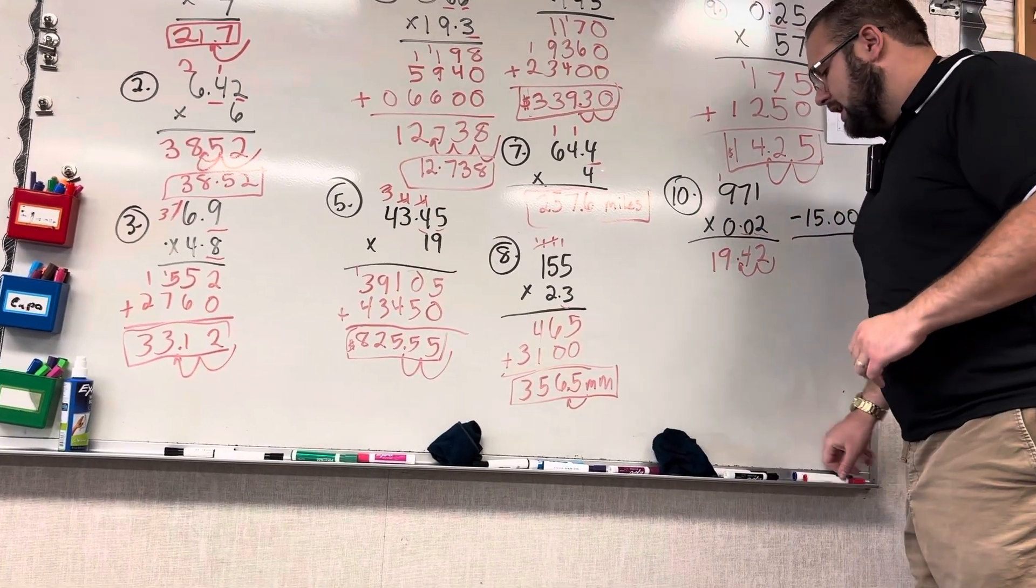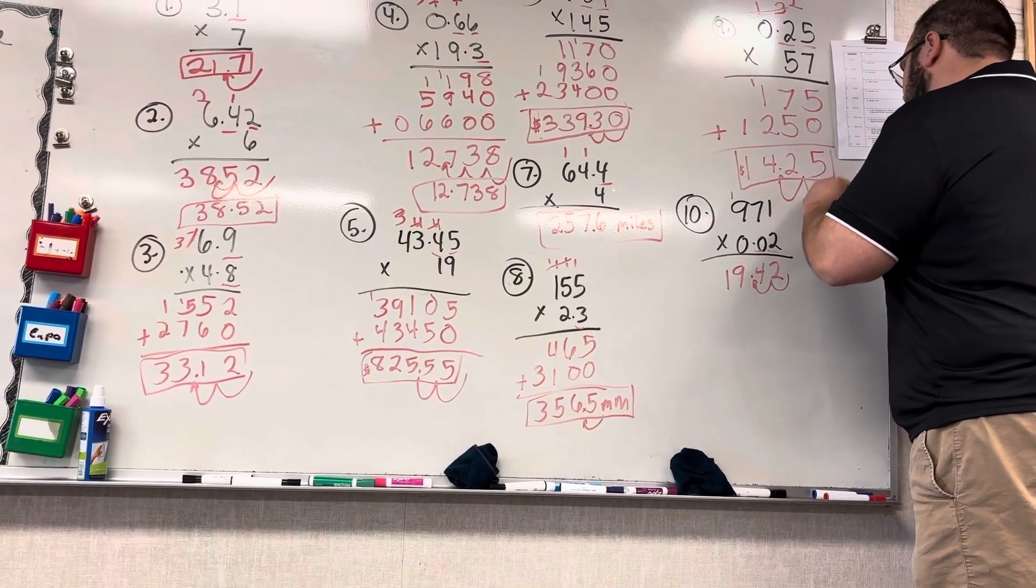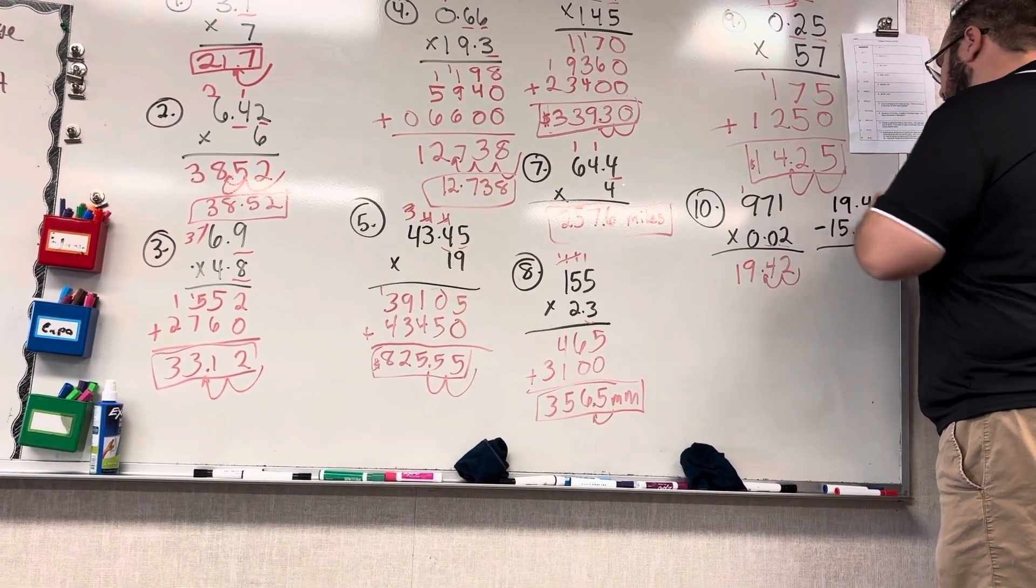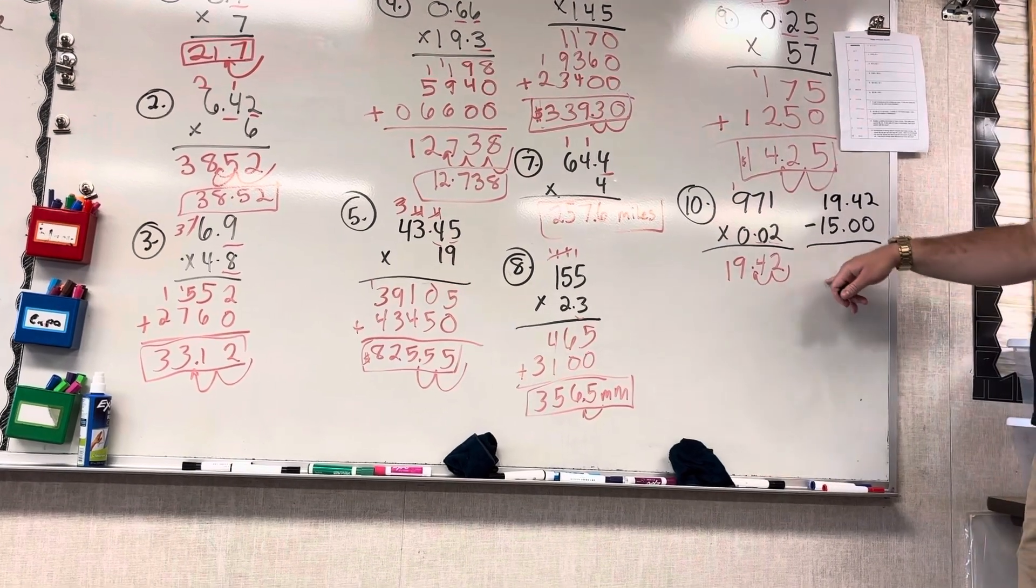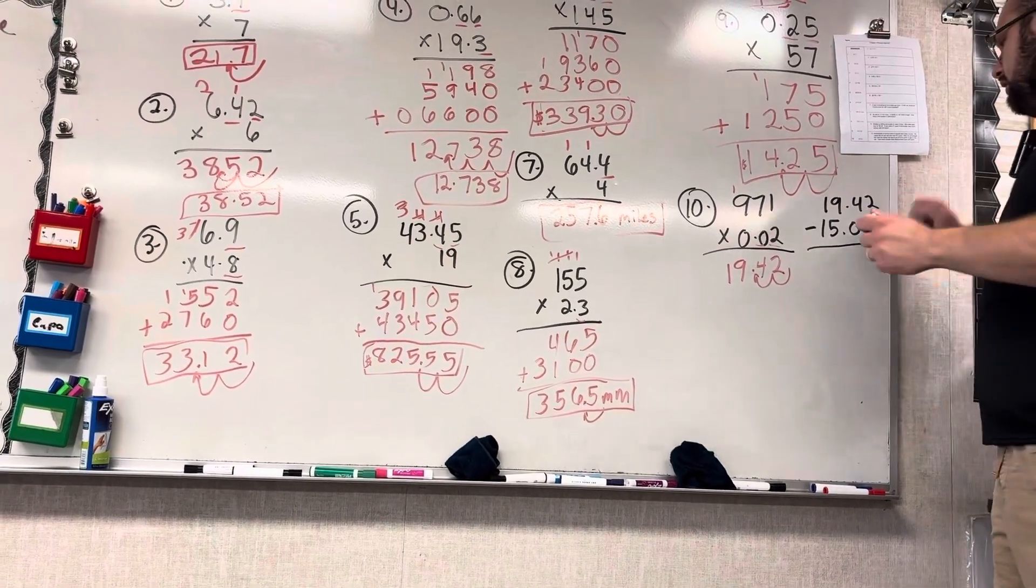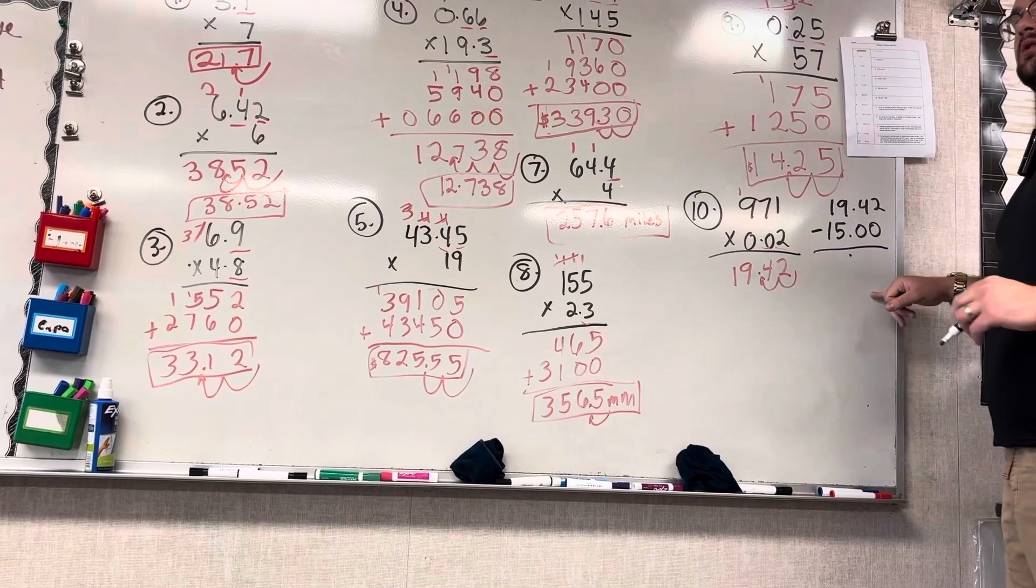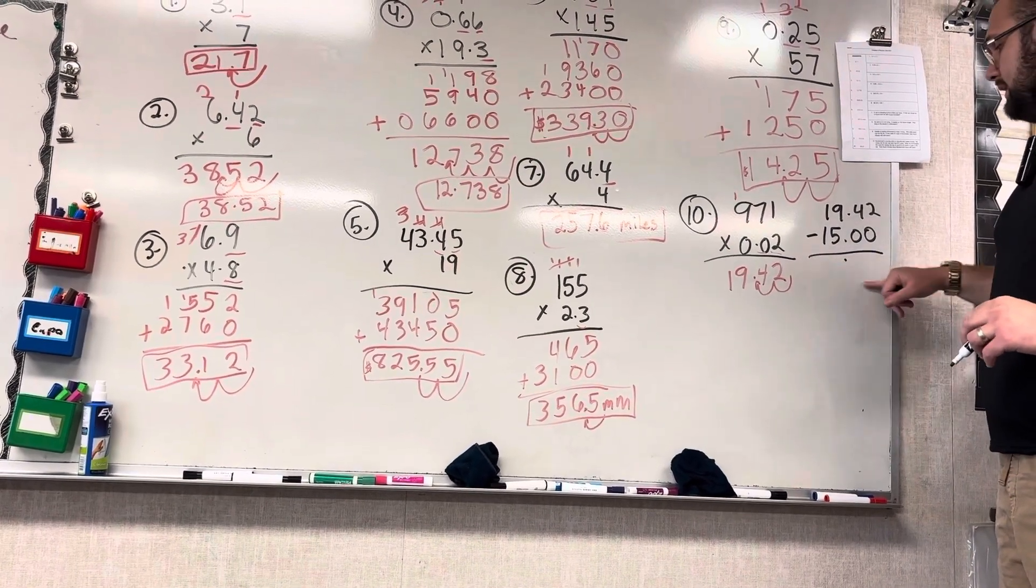I'm going to take the $19.42, and I'm going to subtract $15 from that. Because he says he spends $15 on gas. So line up your decimals, because you're subtracting now. Line up your decimals.